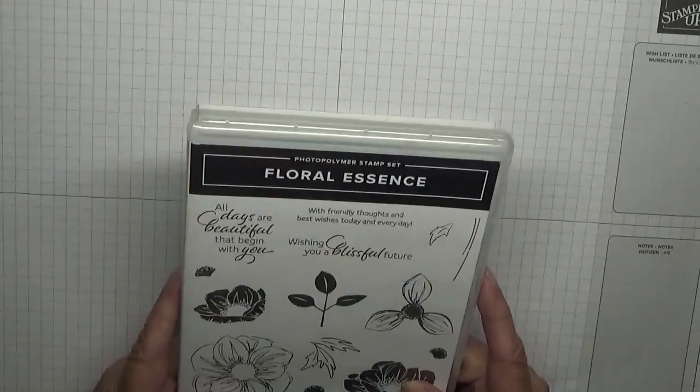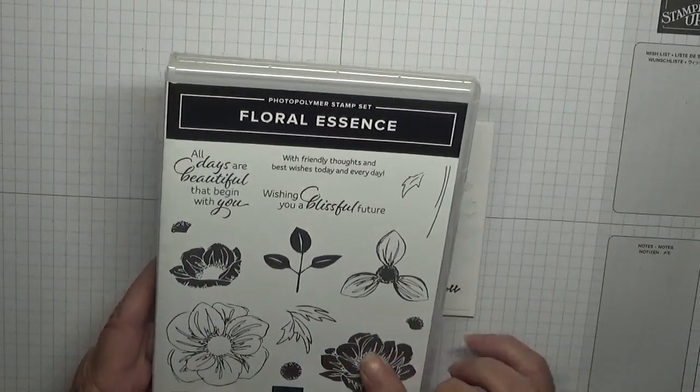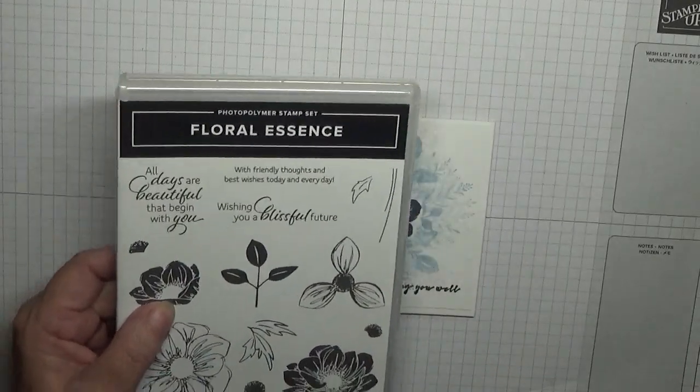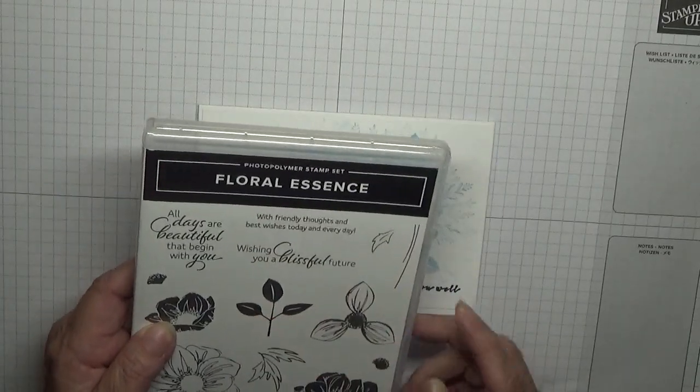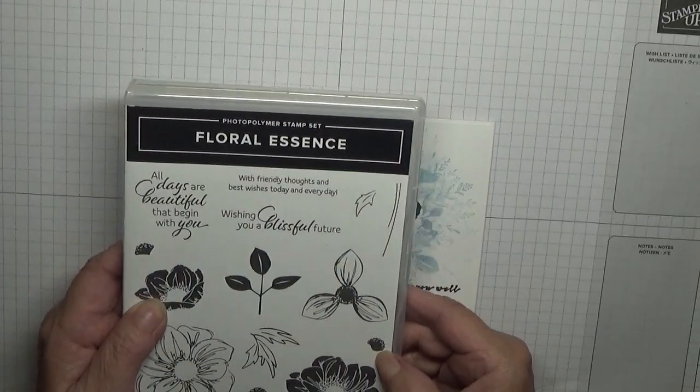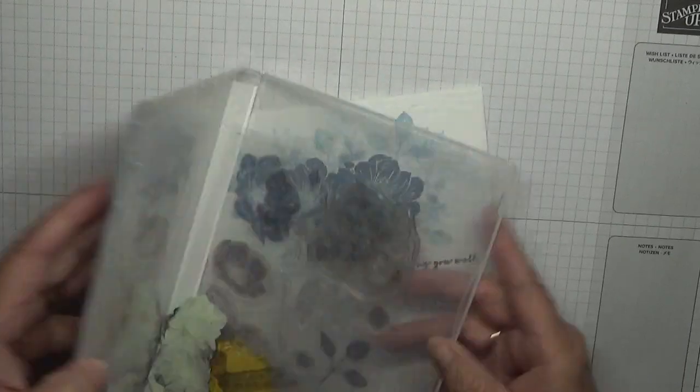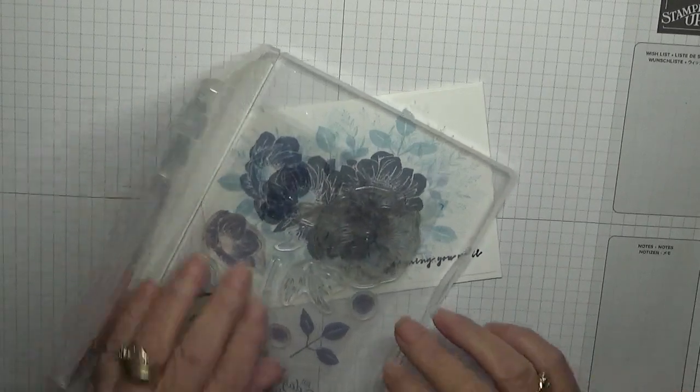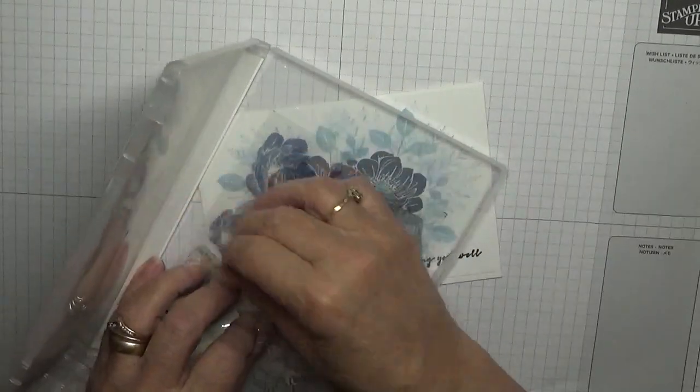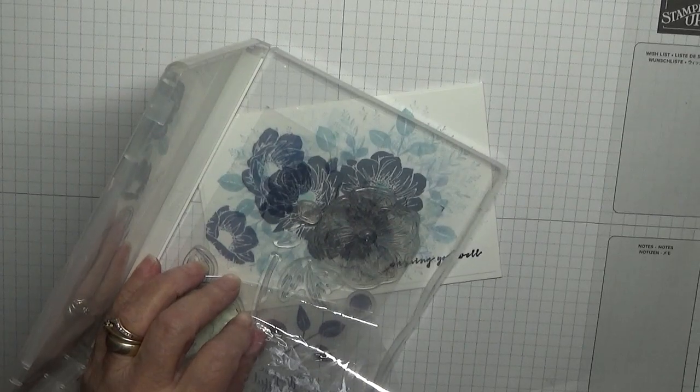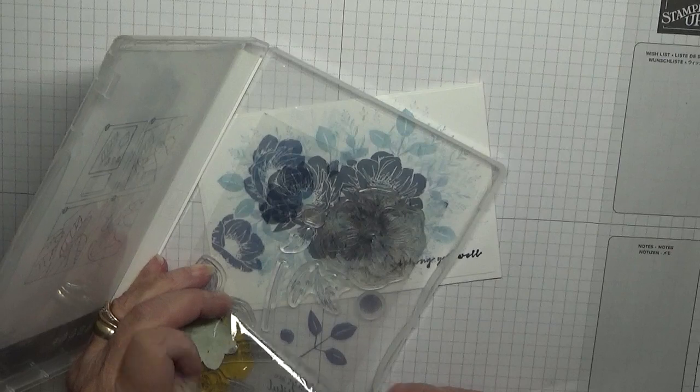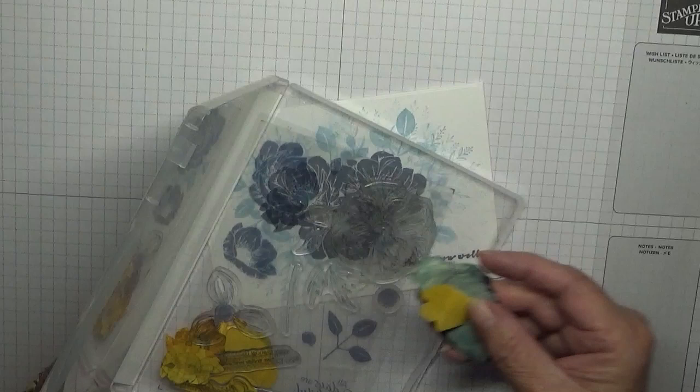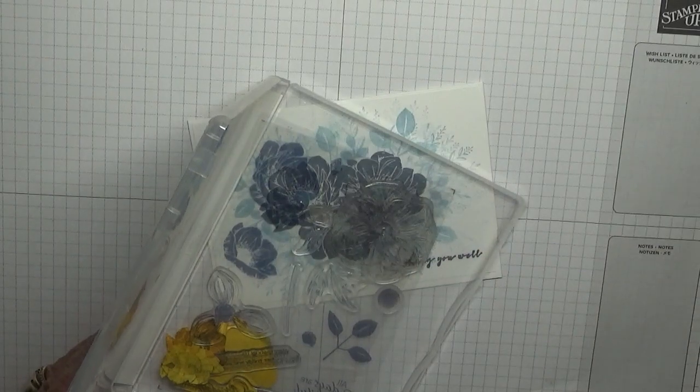To make this card I'm using the stamp sets Floral Essence. I'm going to be using this stamp and this small stamp and the leaf and this infill bit. I haven't got out the infill or the small flower yet. I need some masks, so get them out.